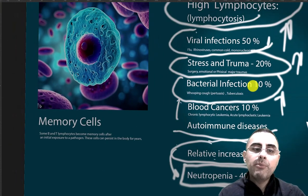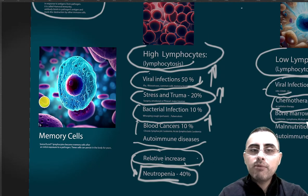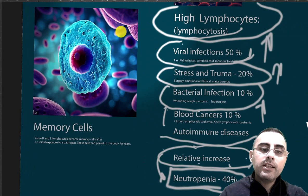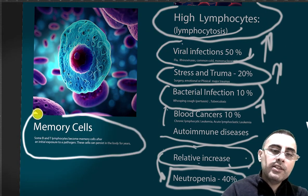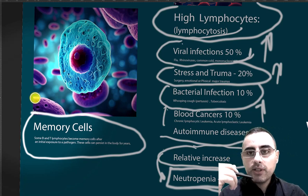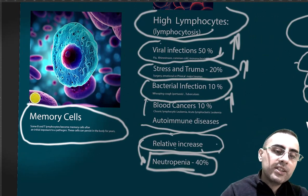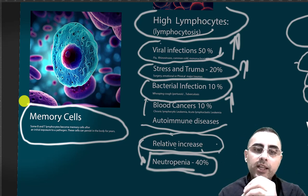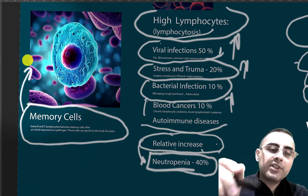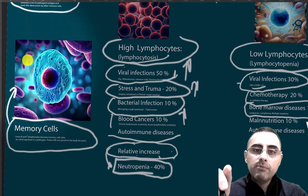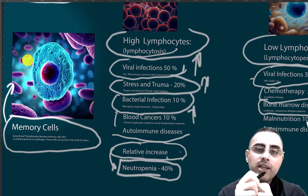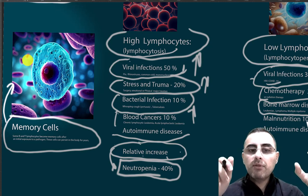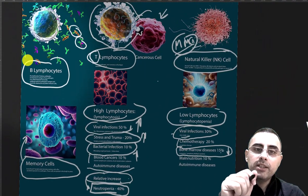An interesting fact about lymphocytes: they have several subtypes. For example, T-lymphocytes are divided into CD4, CD8, and others, and they can form memory cells. Memory cells save information about a pathogen — this is how vaccination works, and why if you get a childhood infection once, you won't get it again. These memory cells circulate in the blood for years, and when a pathogen returns, they detect it easily and produce antibodies quickly for an effective immune response.